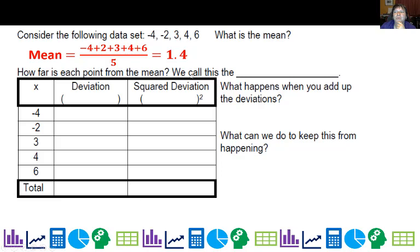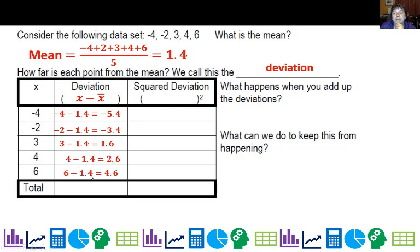So how far is each point from the mean? We call this the deviation. The deviation is your data point minus the mean. So negative 4 minus 1.4 is negative 5.4. We would have negative 3.4 for negative 2, 1.6 for the value of 3, and 2.6 for 6.